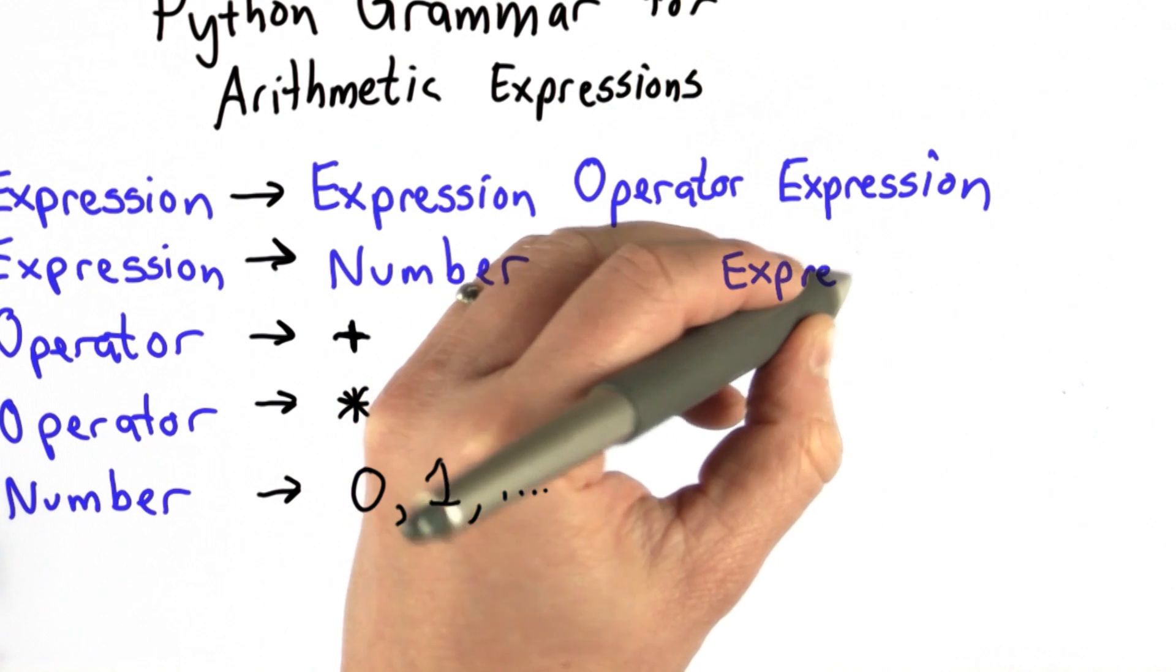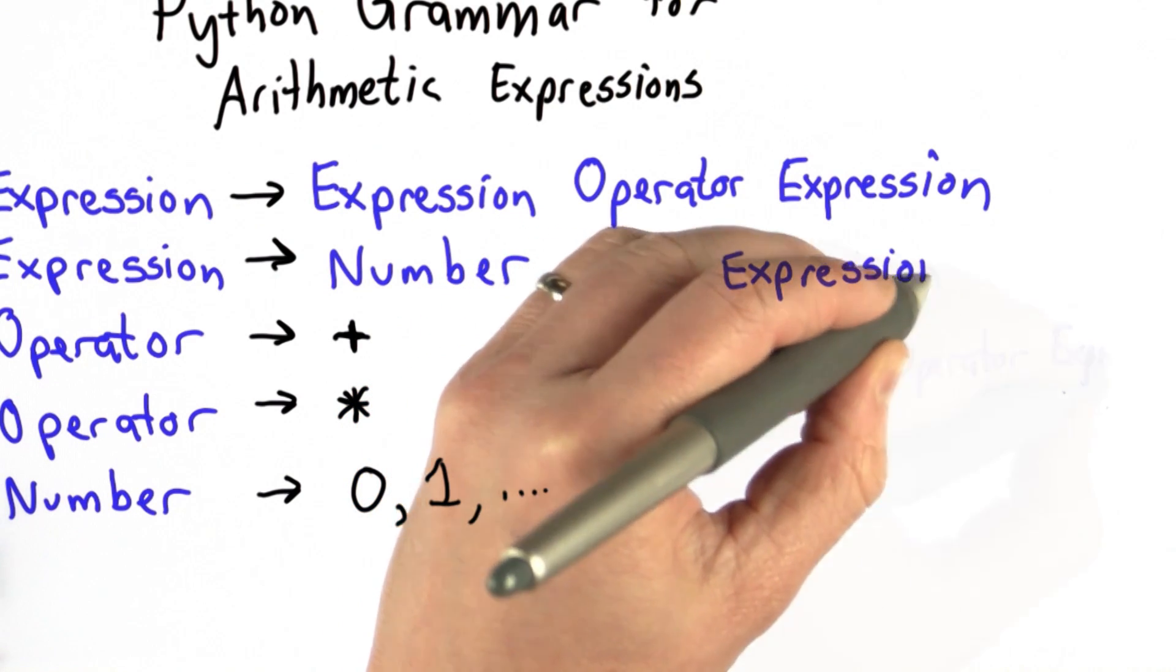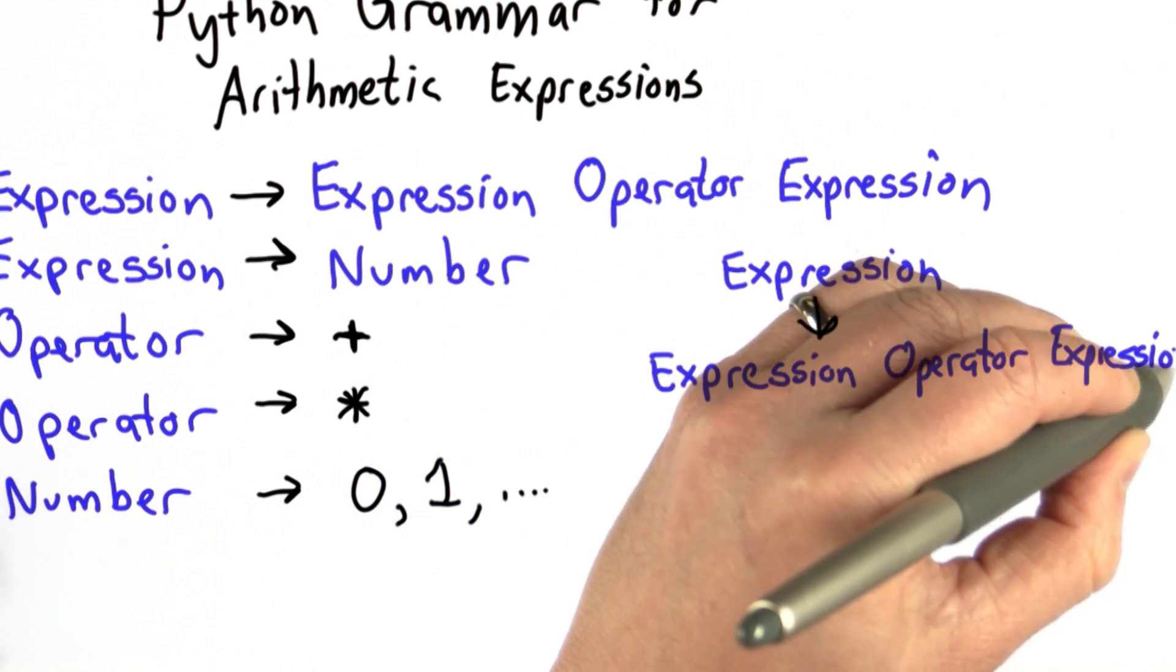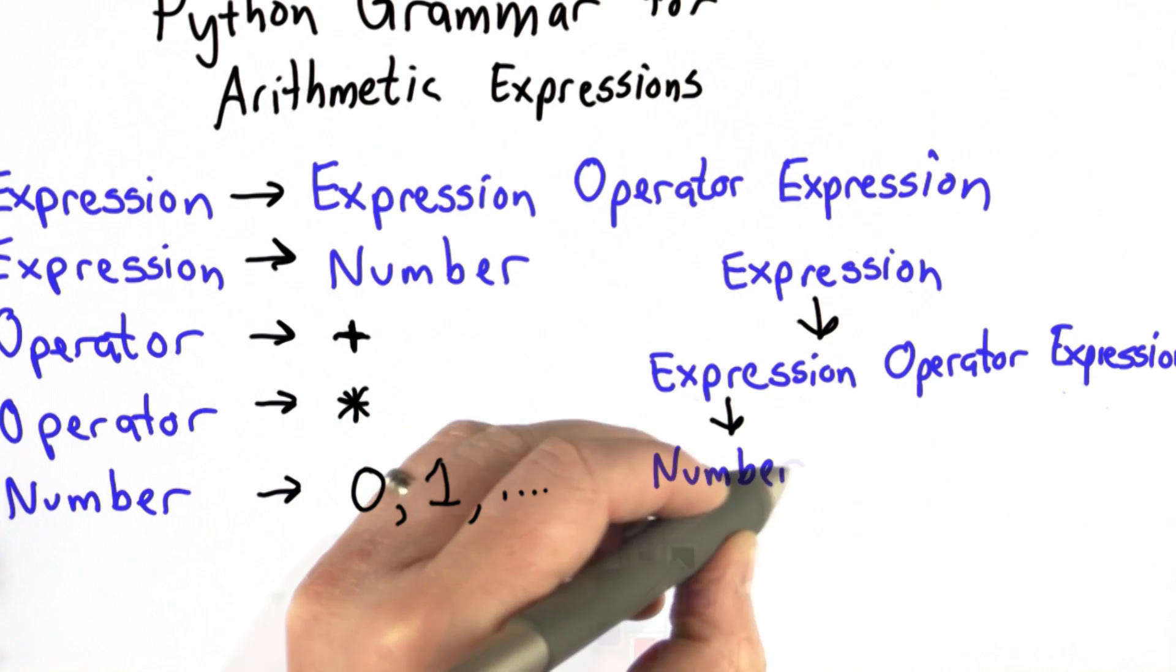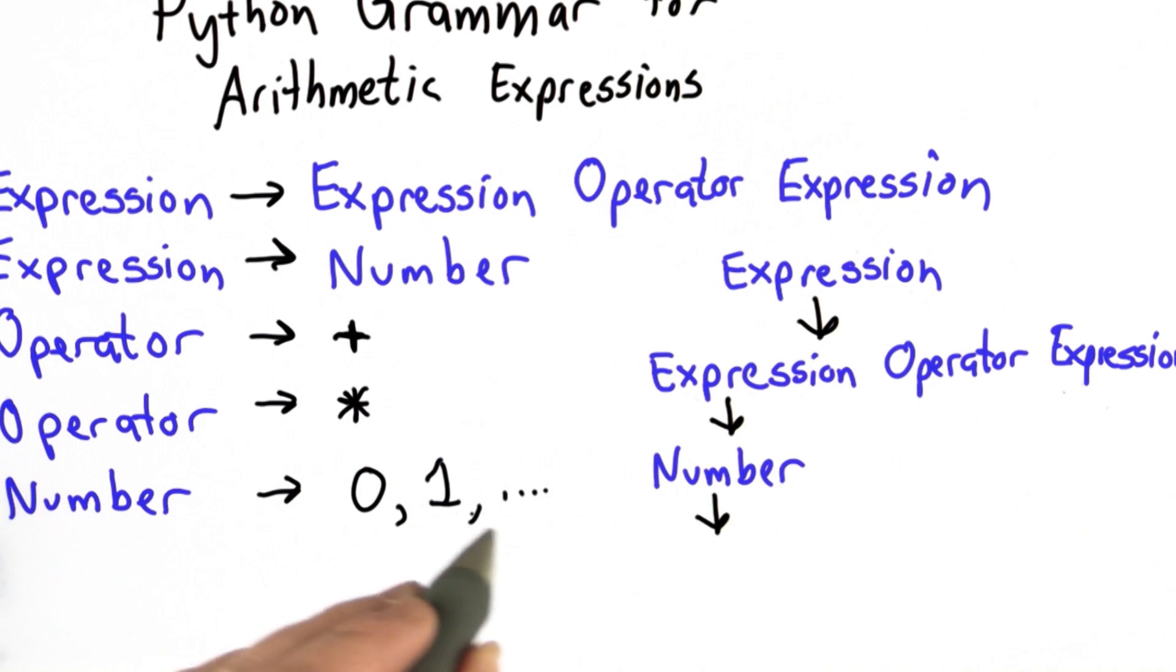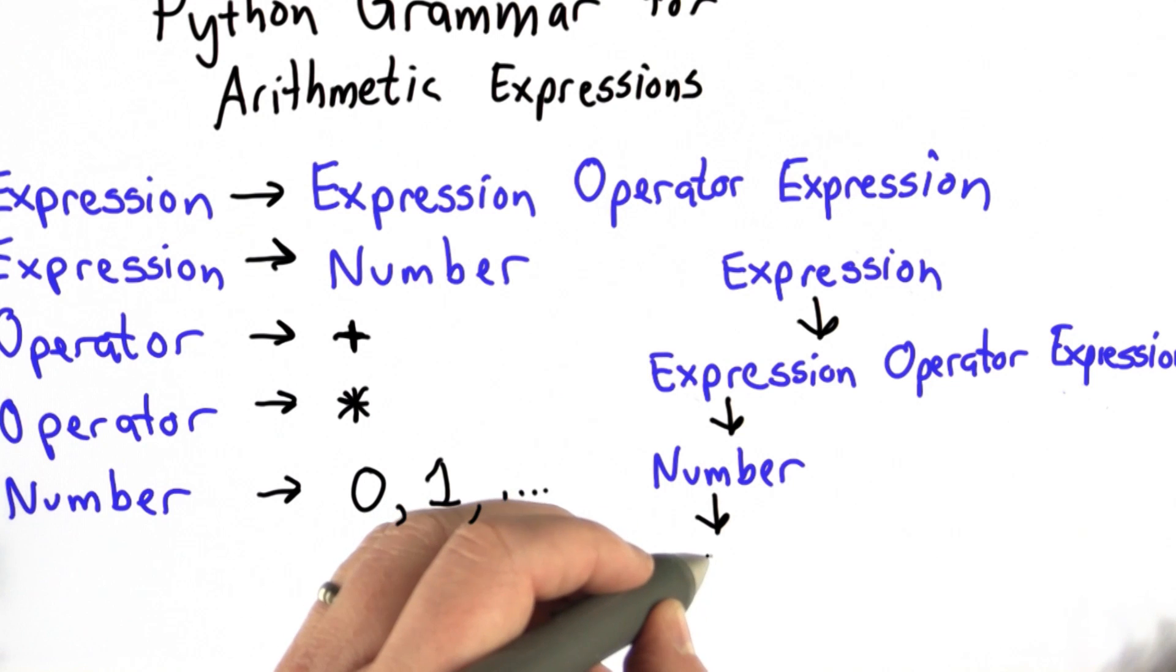Here's an example derivation. We can start with expression. We can follow the rule, replacing that with expression operator expression. And then we can follow the rules again. We can replace the first expression with a number and replace that number with the actual number 1.